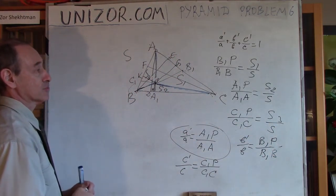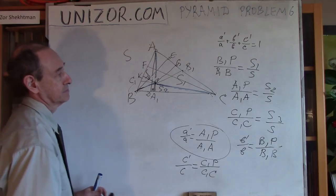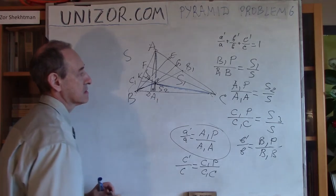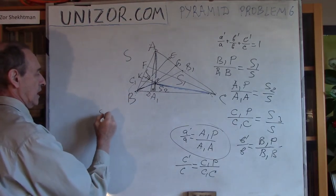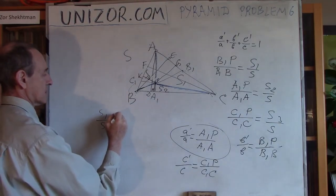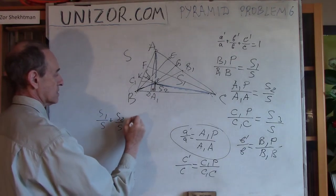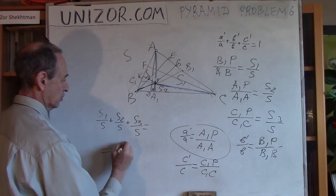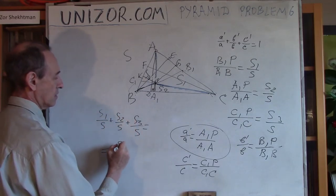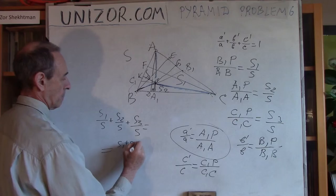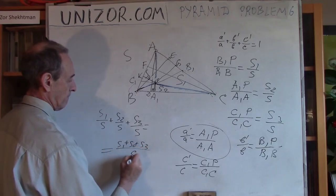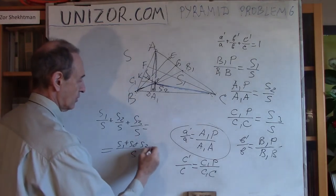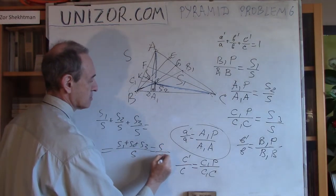And finally, the third triangle would be this one, and the ratio between C1P and C1C is S3 divided by S. What happens if you add them together? You will have S1 divided by S plus S2 divided by S plus S3 divided by S which is equal to sum of S1, S2, and S3, which is actually the area of entire triangle, so it's S divided by S which is 1. And that's exactly what is necessary to prove.